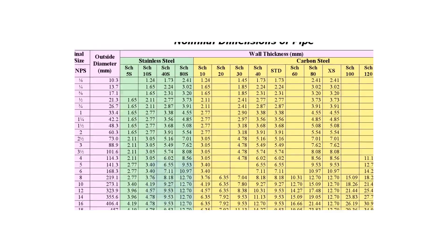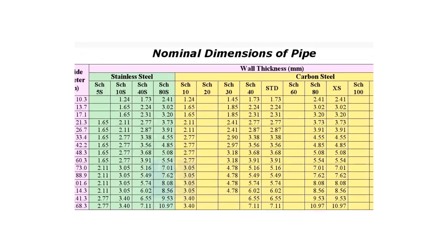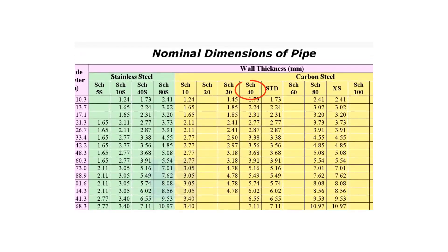What is the difference between schedule 40 and schedule 40S? The letter S in the schedule stands for the material stainless steel.